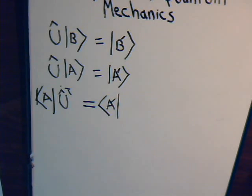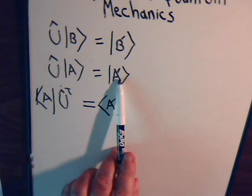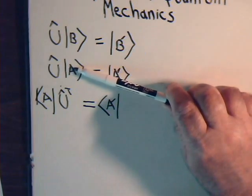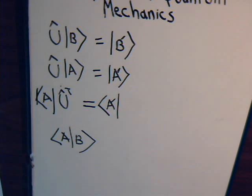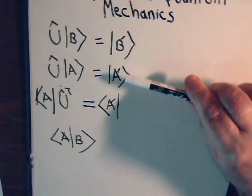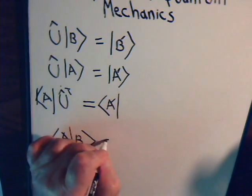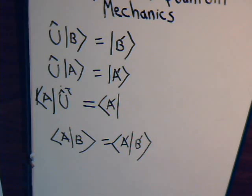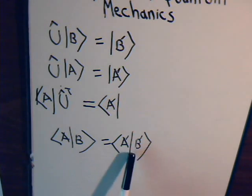When we have the new ket vector B prime and new ket vector A prime, we want to construct them in such a way that the inner product of ket vectors A and B remains unchanged. So we want the inner product of A prime and B prime to be equal to the inner product of A and B. If we want that to hold true, what characteristics would the linear operator U have to have in order to make this come true?